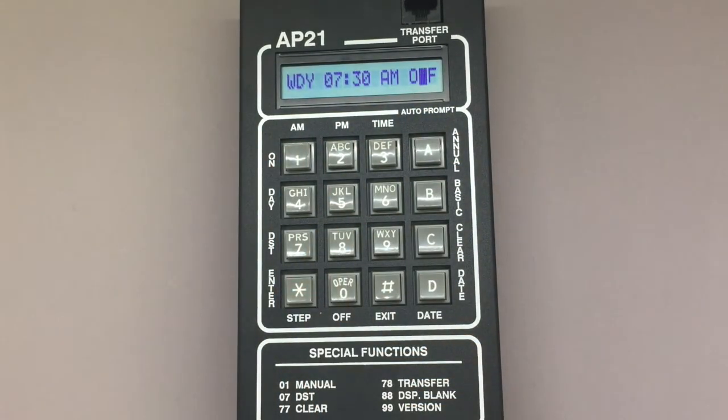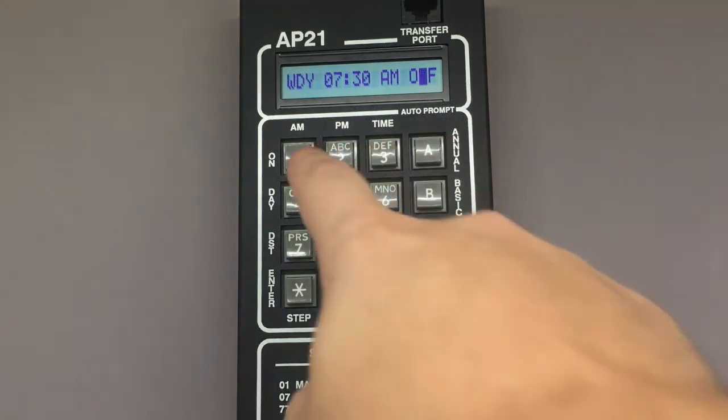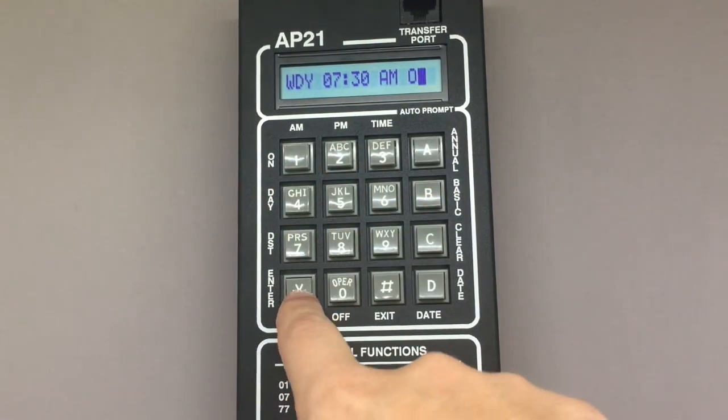The cursor will hop to the on-off designator, where you can input which action you want the flashers to execute. We're turning them on, so I'm going to press 1 to change it, and then star to complete my first step.